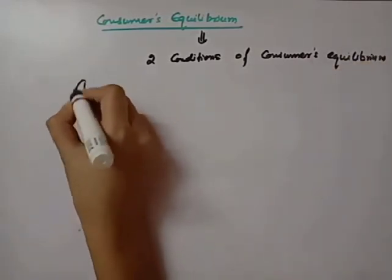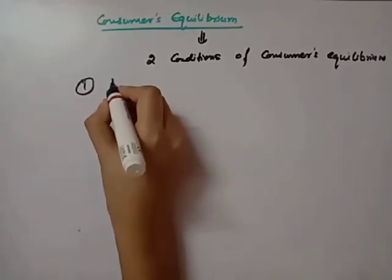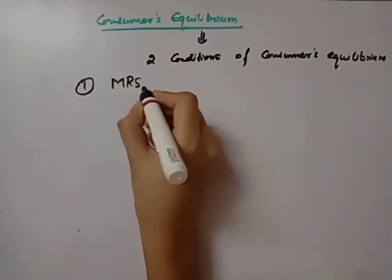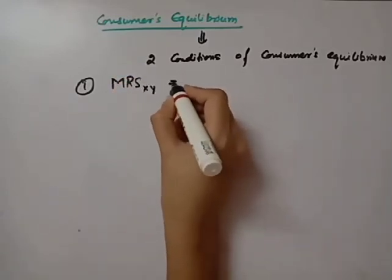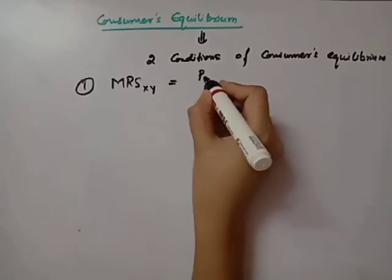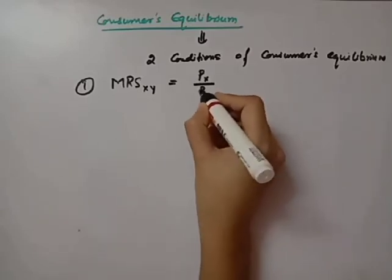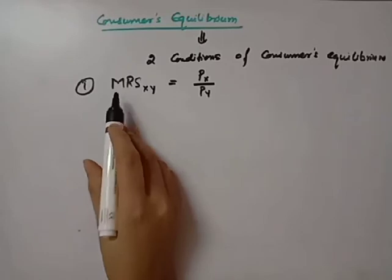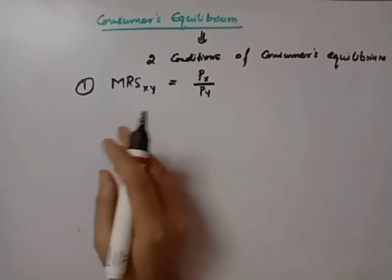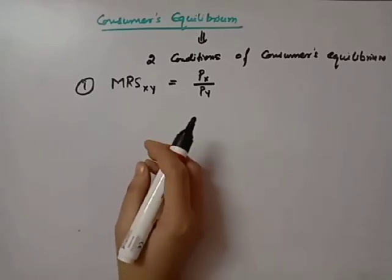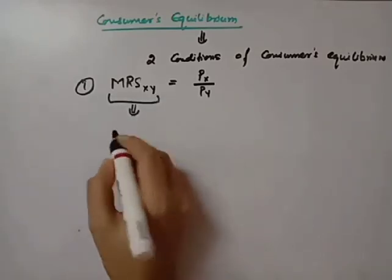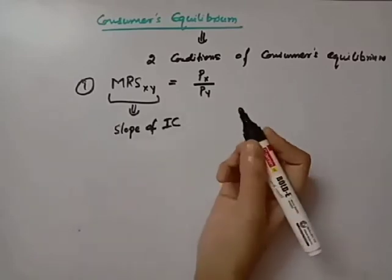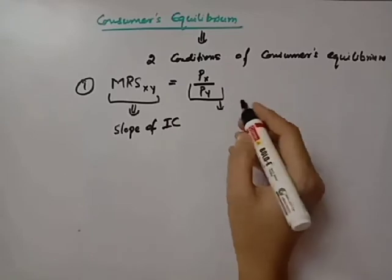The first condition is: the Marginal Rate of Substitution between commodity X and Y is equal to the price of X divided by the price of Y. Basically, the Marginal Rate of Substitution is the rate at which the consumer is willing to substitute good X for good Y. This represents the slope of the indifference curve, and price of X over price of Y is the slope of the budget line.